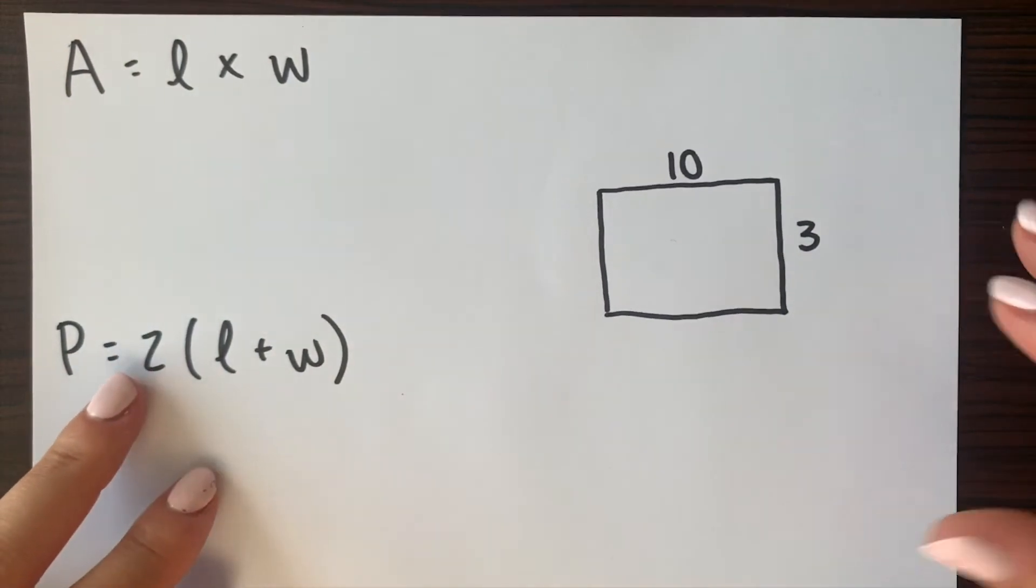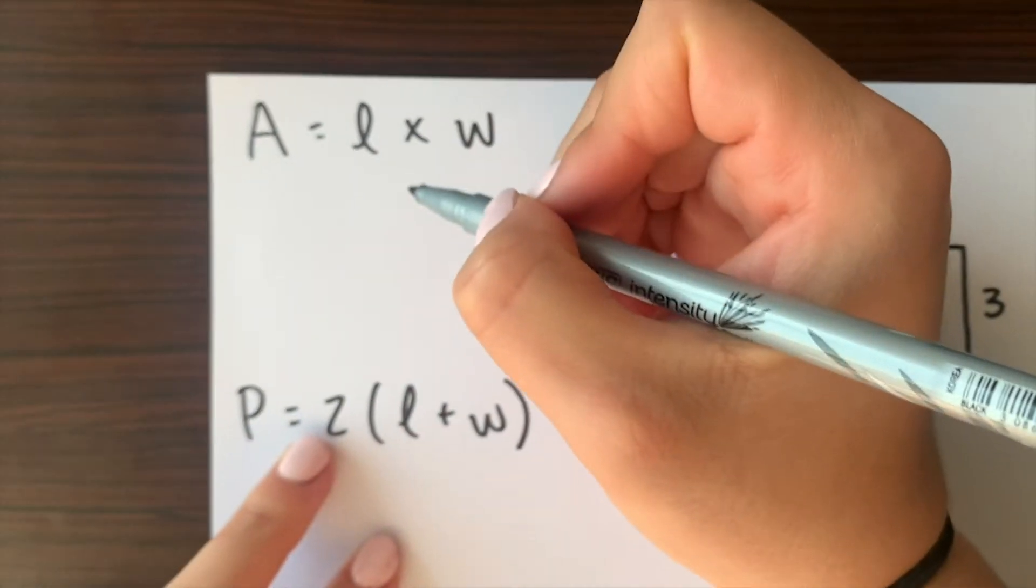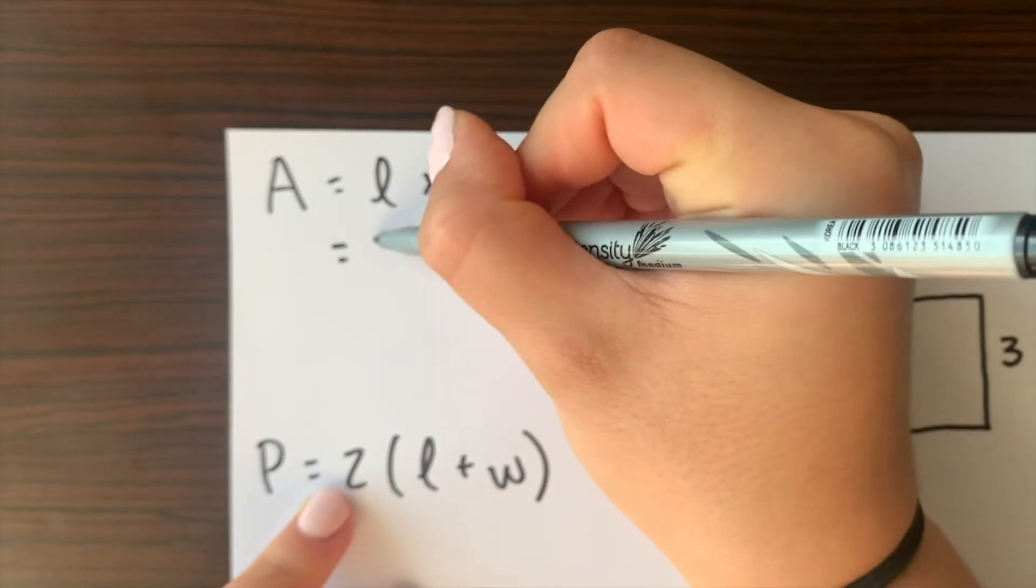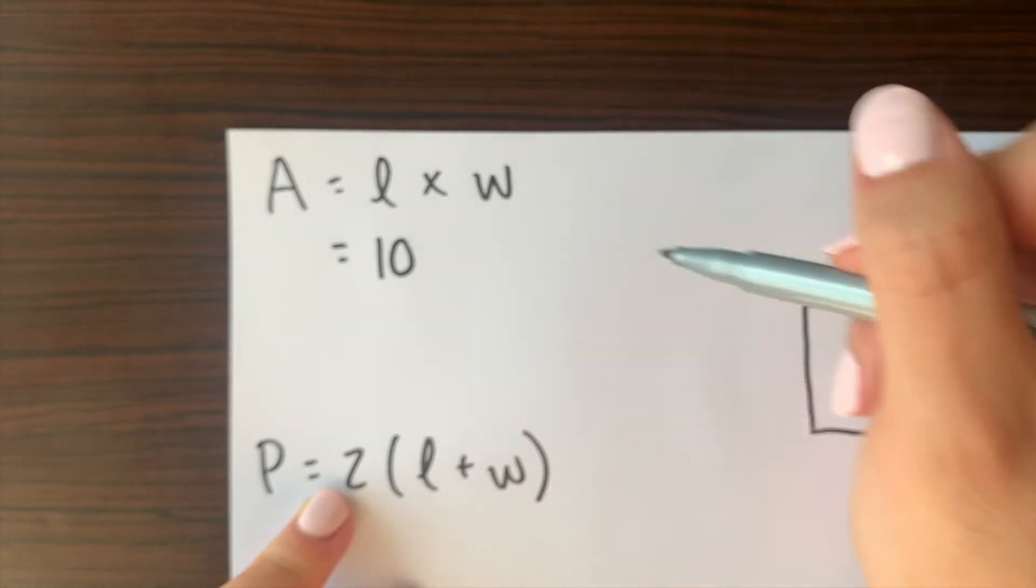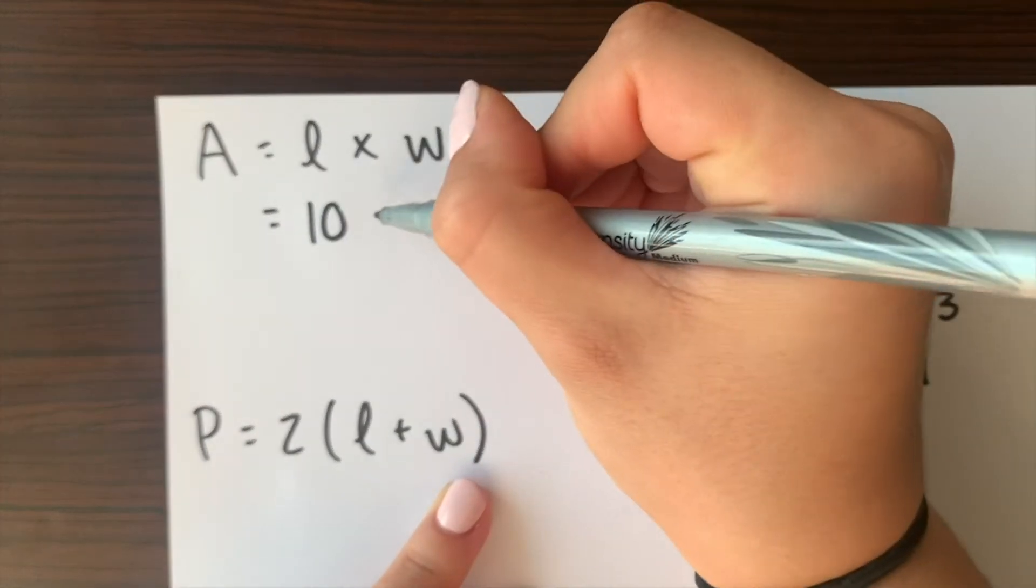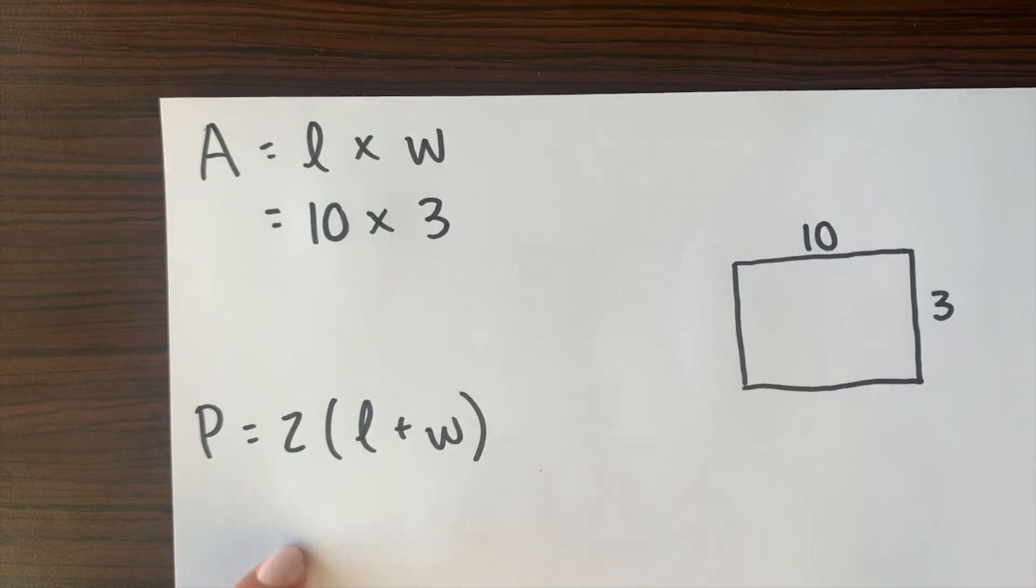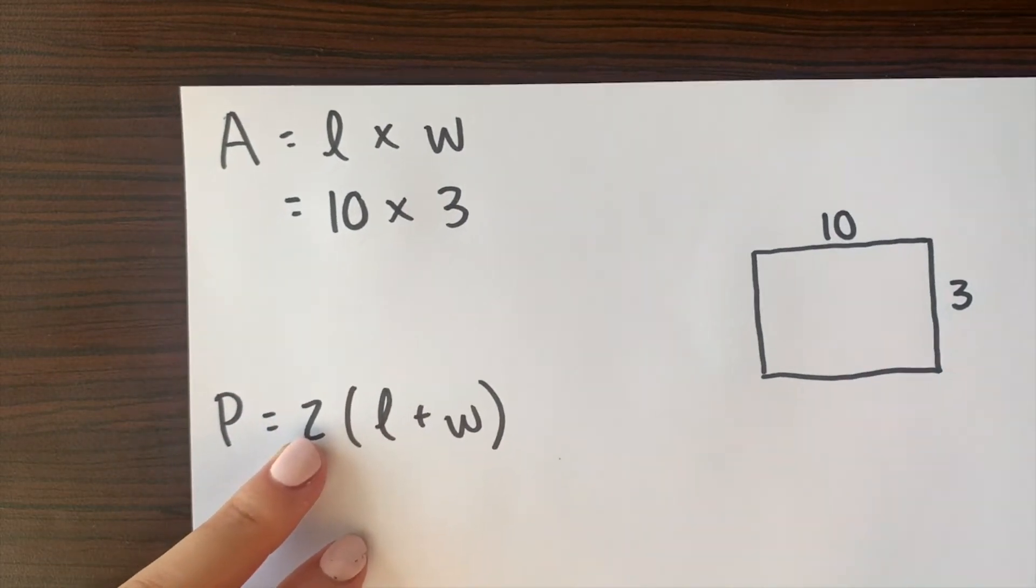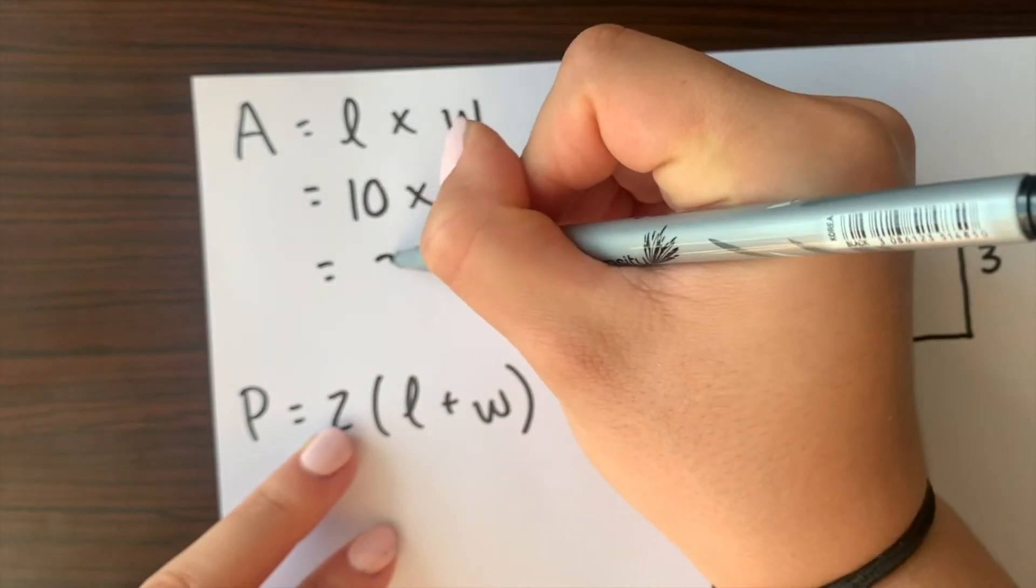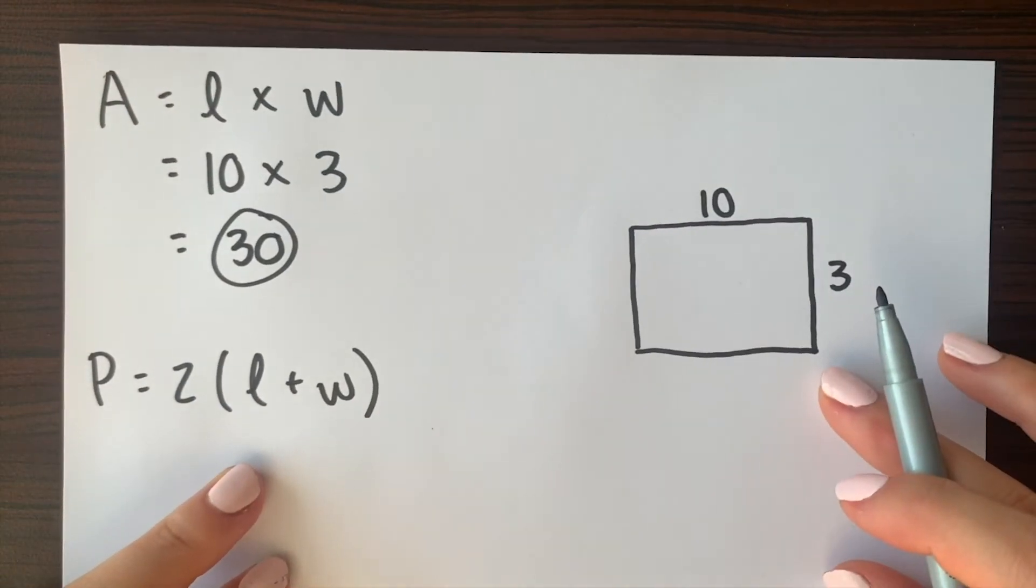So again since our length is 10 we're going to go ahead and plug in our 10 for the length and our width is 3 here so we're gonna go ahead and plug in our 3. So our area would be 10 times 3 which gives us 30. So our area for this rectangle would be 30.